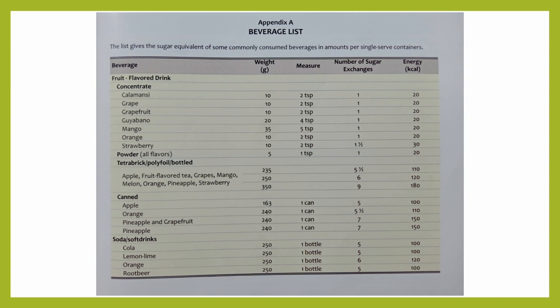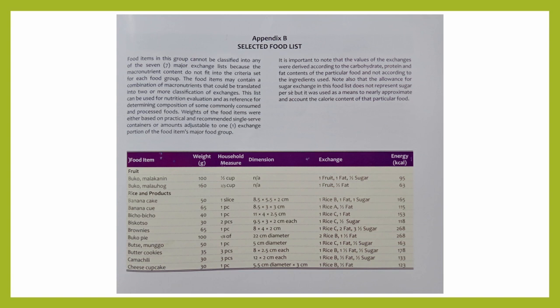There are other foods and beverages not available in the 7 major food exchanges and they can be found in the appendices. For example, appendix A is your beverage list, which gives the sugar equivalent of some commonly consumed beverages in amounts per single-serve containers. Then you also have the selected food list — these food items cannot be classified into any of the 7 major exchange lists because the macronutrient content does not fit the criteria set for each food group. They may contain a combination of macronutrients that could be translated into 2 or more classifications of exchanges.